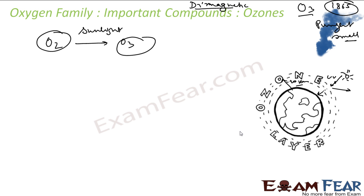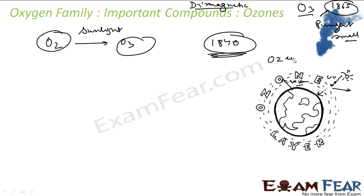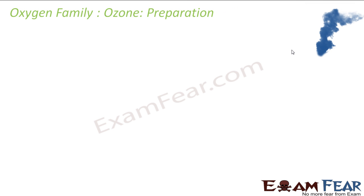Before preparation, here are some historical facts. The formula of ozone was derived in 1865, but ozone was first recognized in 1840 by Christian Friedrich. The word 'ozone' came from the Greek word 'ozein,' which means smell — because ozone has a very bad smell, and thus the name ozone came from this Greek word.